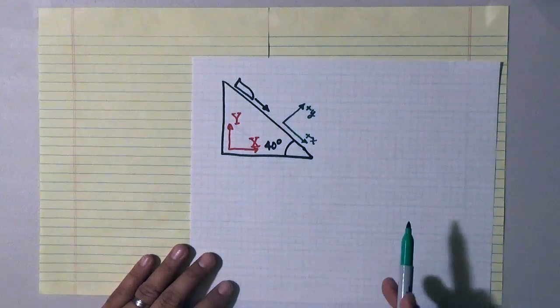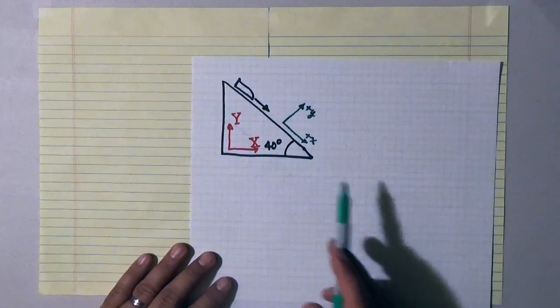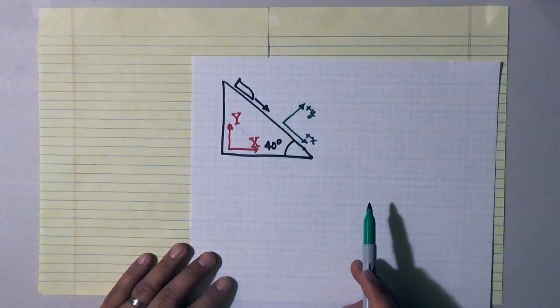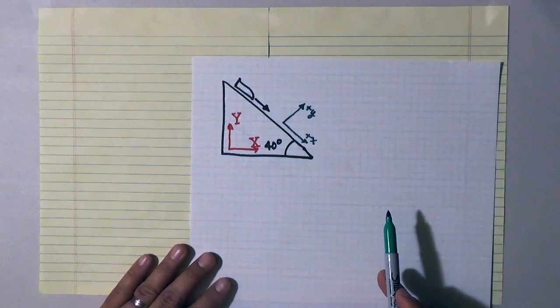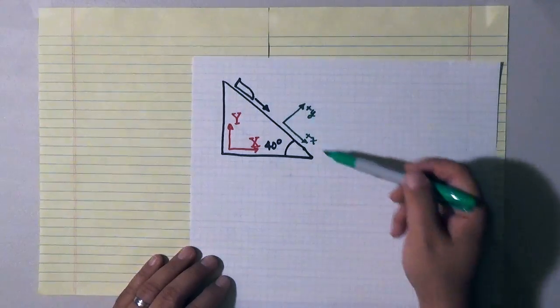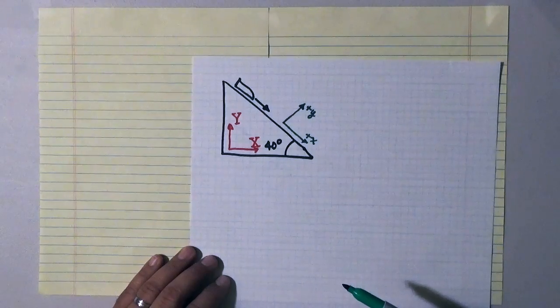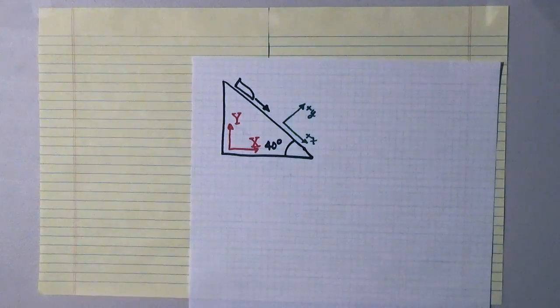Now that makes a little bit of work for us early on because it means we will have to decompose some vectors. But in the end what this will allow us to do is only work with one set of kinematic equations, namely the kinematic equations that describe the motion in the x-direction.